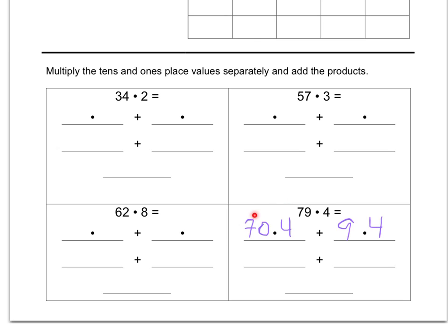Well, an easy way for me is I know 4 times 7 is 28 and then I'll just tack on the 0 so that should be 280. And then I have 4 times 9 I know is 36. So now I have 280 plus 36. So when I add those together I get 316.